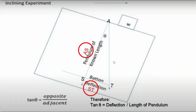AS is the length of the plumb line at upright position, and ST is the length at deflection — this is the deflection. If we have a triangle, we can use trigonometry: tangent theta equals opposite divided by adjacent, in order to determine the list of the ship given the weight being shifted laterally. Therefore, tangent theta equals the button deflection divided by the length of the pendulum.